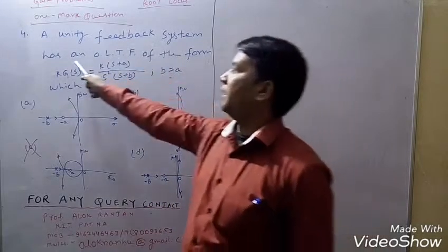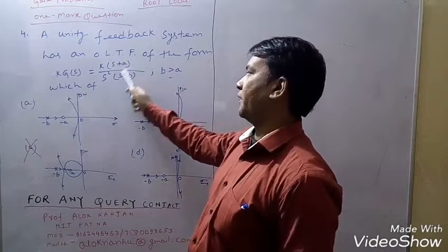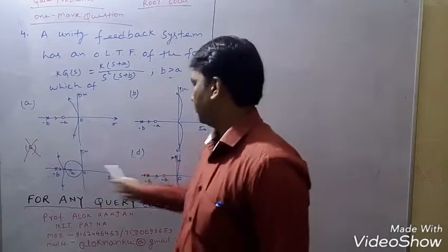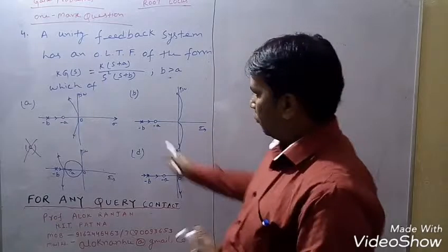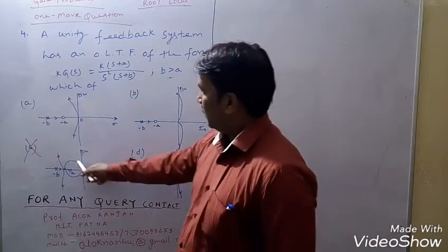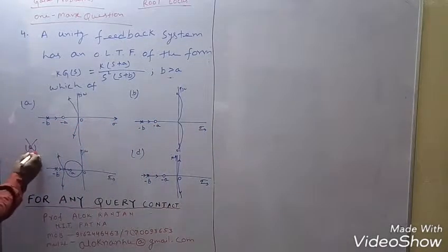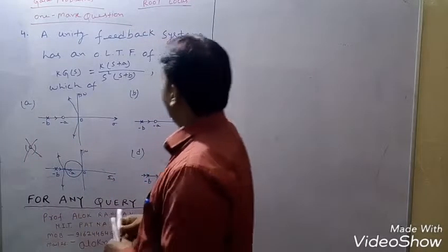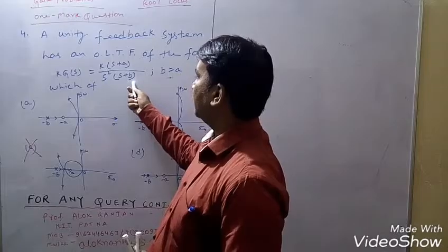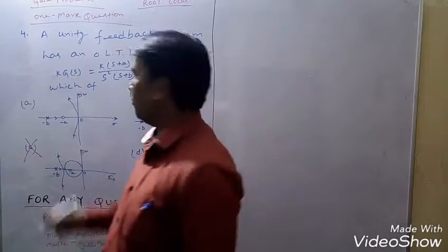Now the fourth problem: a unity feedback system has an open loop transfer function G(s) = K(s+a) / [s²(s+b)], where b is greater than a. There are four options. First, option C cannot be a correct root locus. At option C there are two poles at origin and one pole at minus b.